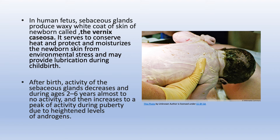In human fetuses, sebaceous glands produce a waxy white coat on the skin of the newborn called vernix caseosa. It serves to conserve heat, protect, and moisturize the newborn skin from environmental stress, and may provide lubrication during childbirth. After birth, the activity of the sebaceous glands decreases, and during ages 2 to 6 years there is almost no activity. Then activity increases to a peak during puberty due to heightened levels of androgens.